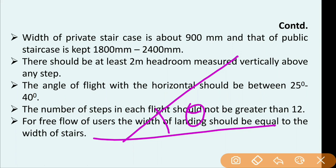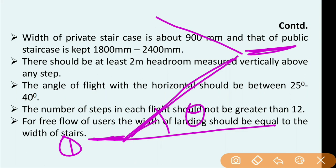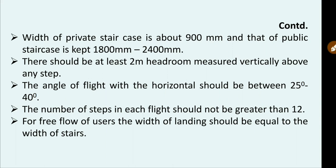The number of steps in each flight should not be greater than 12. In buildings, we design the staircase in dog leg type — by the first flight we reach the intermediate landing, then we climb another flight. After climbing the first flight, a person may take rest at the intermediate landing, making the journey comfortable. For free flow of users, the width of the landing should always be equal to the width of the stairs so that traffic flows freely.